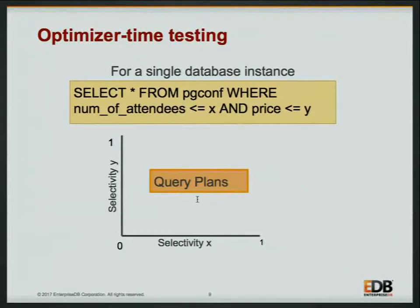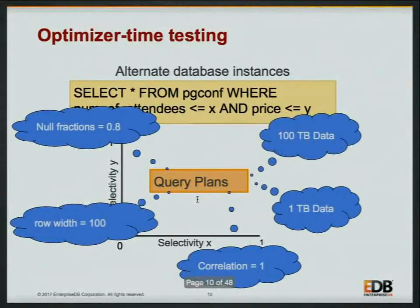Given different values of X and Y for a single database instance, what query plans will be generated — that is the first set of testing. And if we use alternative database instances, like changing the null fraction of the data, changing the row width of the table, or changing the correlation between the data, then what type of plan is generated?